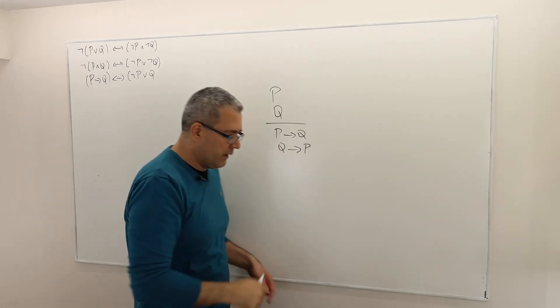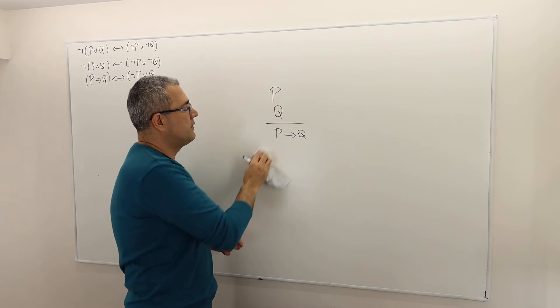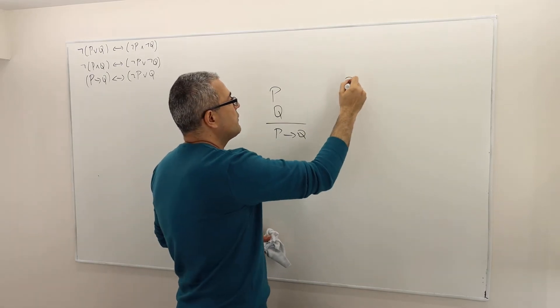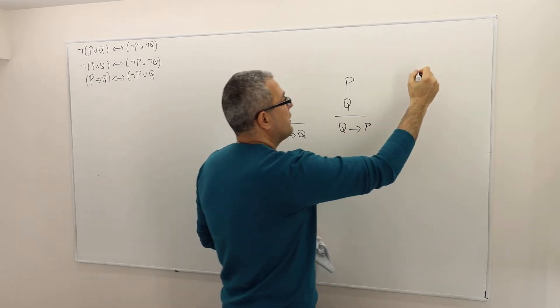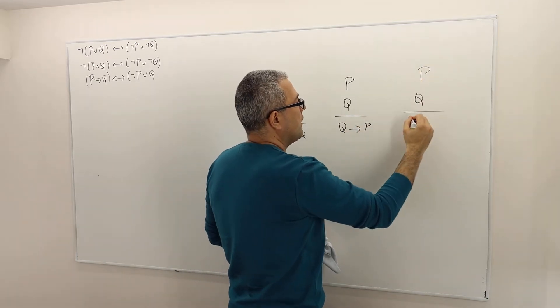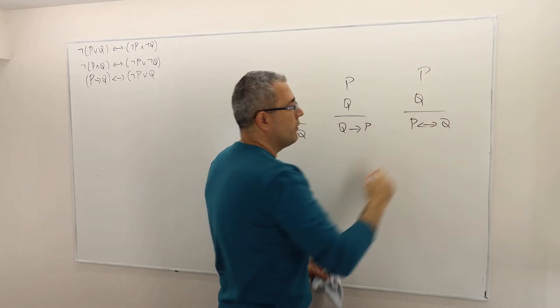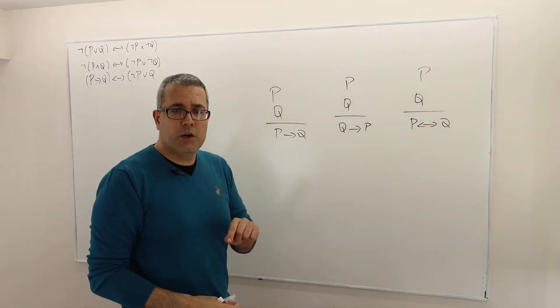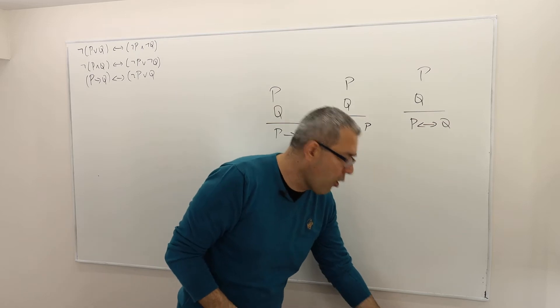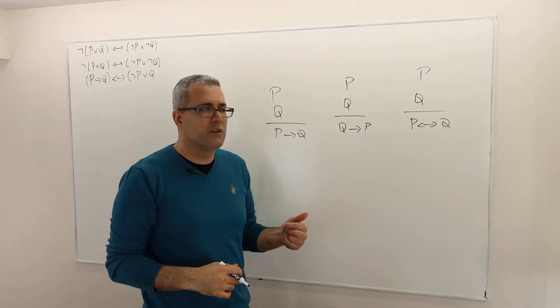And referring to the truth table, I said P implies Q or Q implies P is true. This is a true argument. This is also a true argument, Q implies P. This one is also a true argument, P if and only if Q. So all three are true arguments, so I can actually call them inference rules. There is no harm with this.